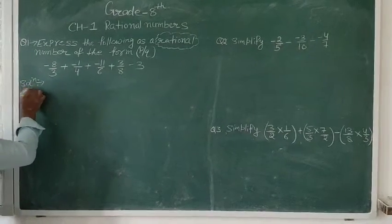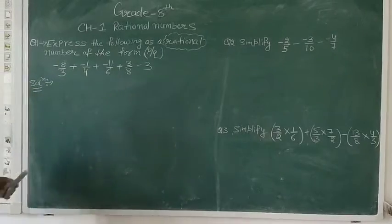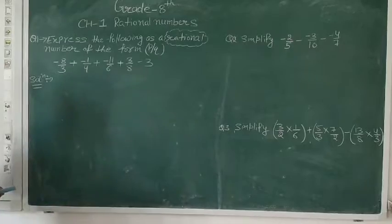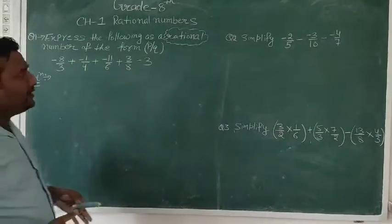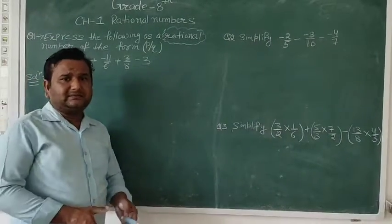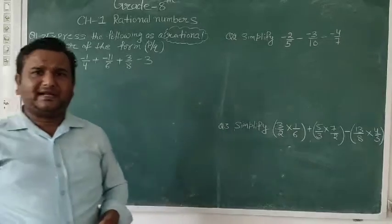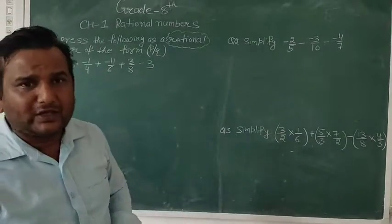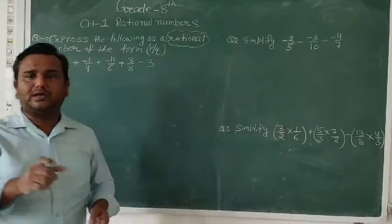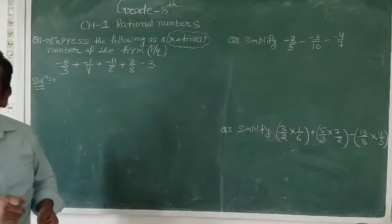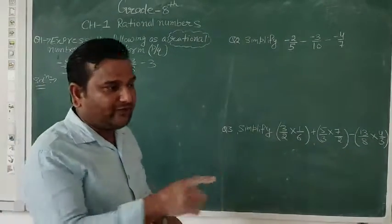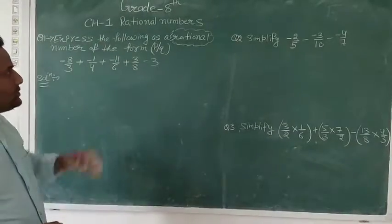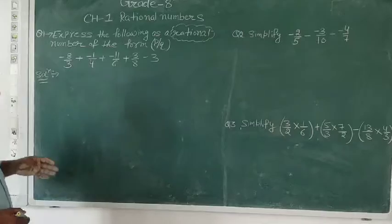Our first question is: express the following as a rational number in the form of P upon Q. We already know that a rational number is a number which can be expressed in the form of P upon Q, where Q is never equal to 0. Fractions are also said to be rational numbers. So let us solve this question.